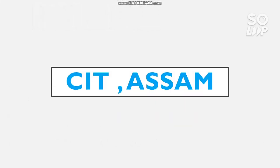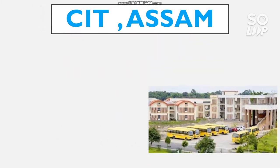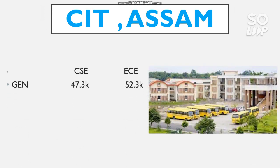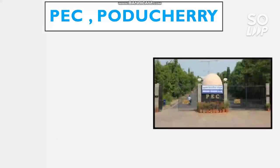The next is CIT Assam, that is the Central Institute of Technology. Here only the General cutoff is available for this GFDI - there is no reservation for particular categories. For CS you need a CRL rank of 47,300, and for EC it is 52,300.